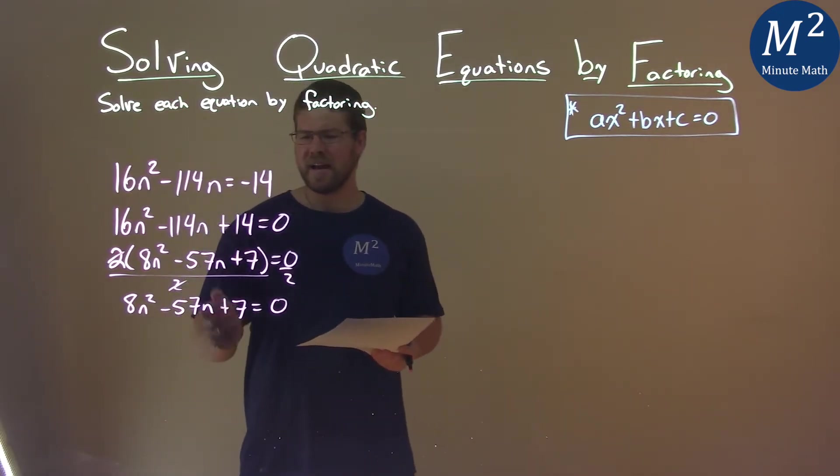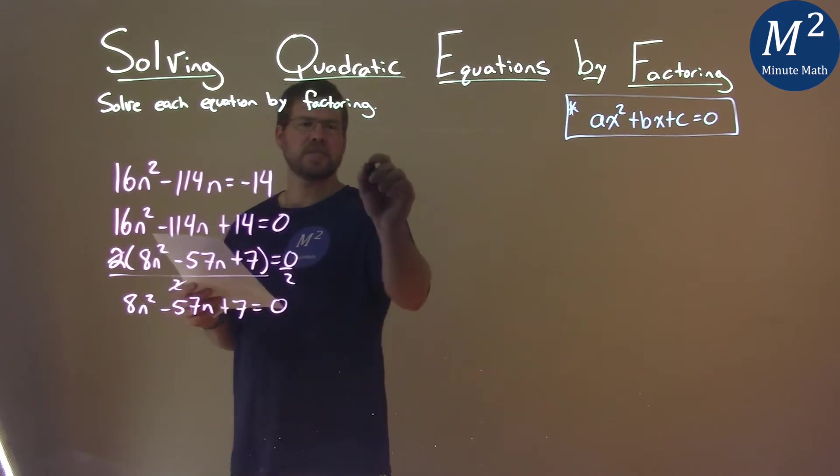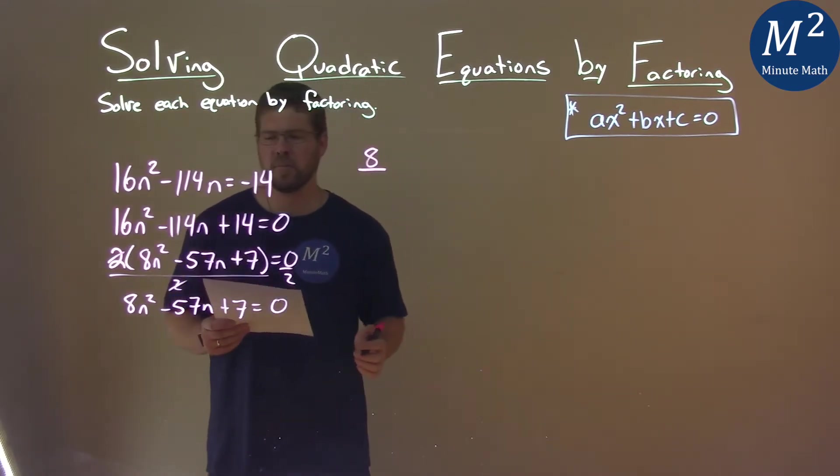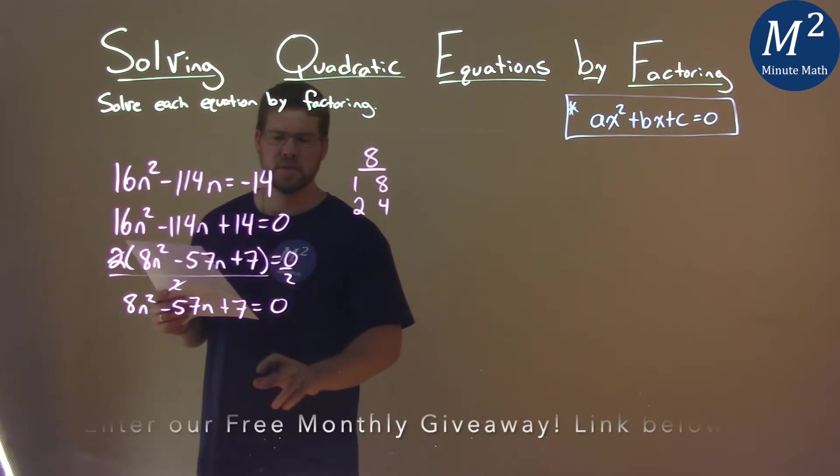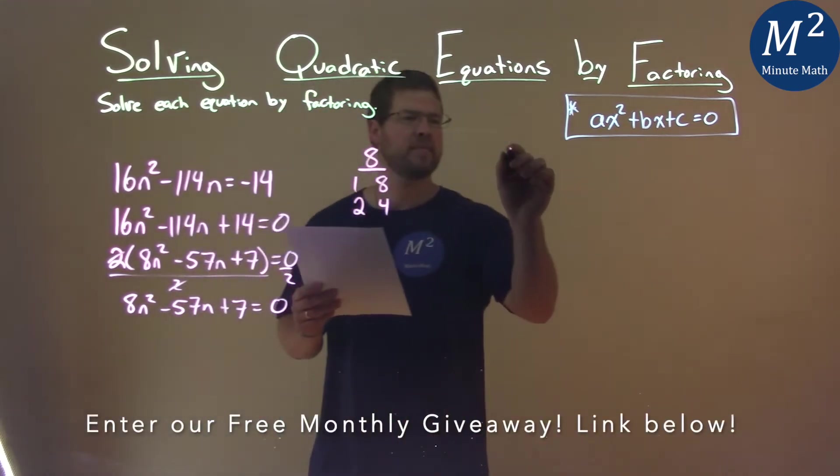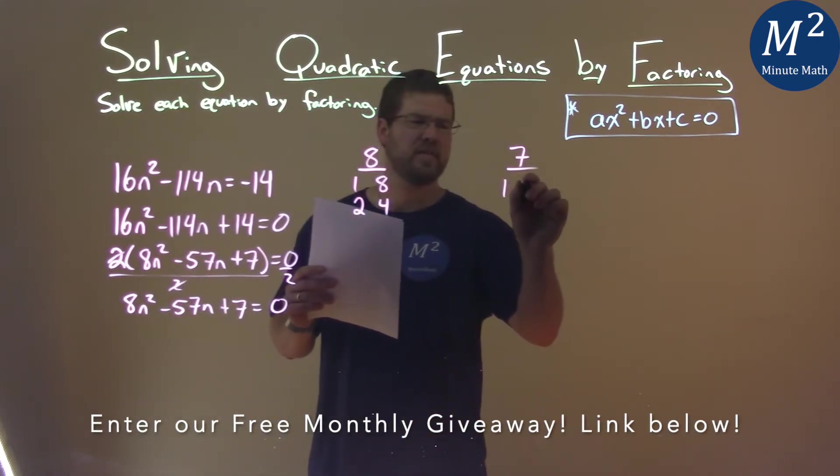Now we have a quadratic that looks a little hairy here. I have an a value, which is 8, and 8 can be multiplied to be 1 and 8 or 2 and 4. My c value is 7, and two numbers that multiply to 7 are just 1 and 7.